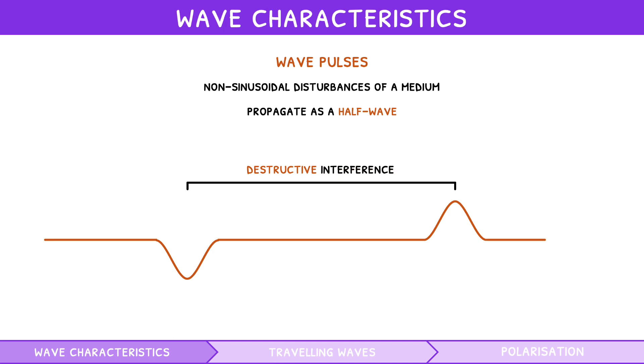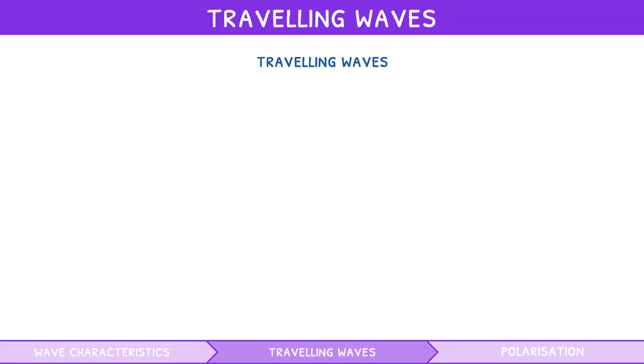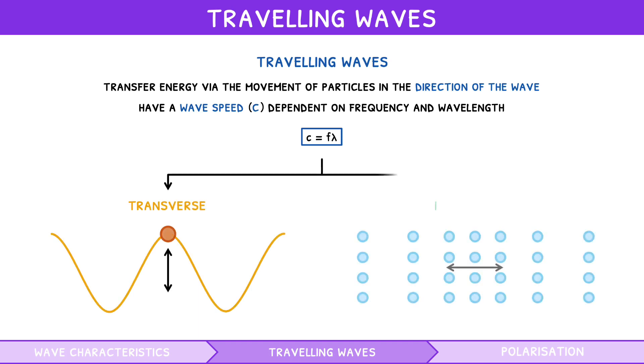Now that we know the basic characteristics of waves, let's explore the most common type of waves, travelling waves. Travelling waves are defined as oscillating waves that transfer energy through a medium via the movement of particles in the direction of the wave. These waves always have a constant speed, c, that is dependent on wave frequency f and wavelength lambda. The equation for this is speed equals frequency times wavelength. However, particles can move in two directions, forming either transverse waves or longitudinal waves.